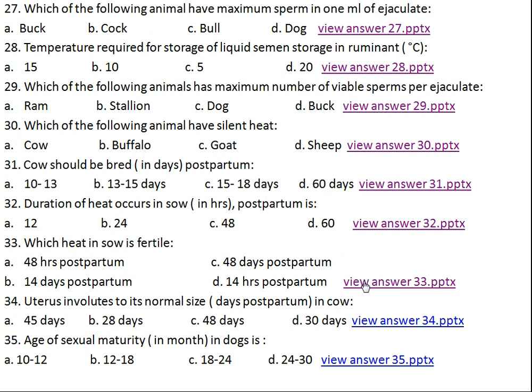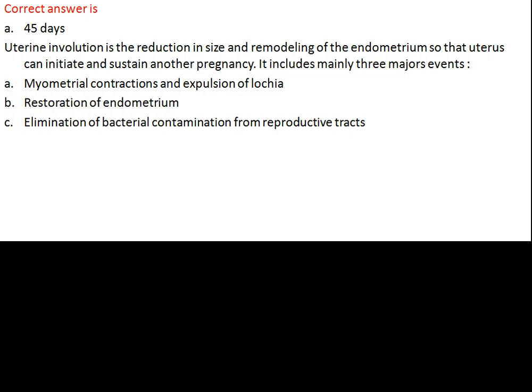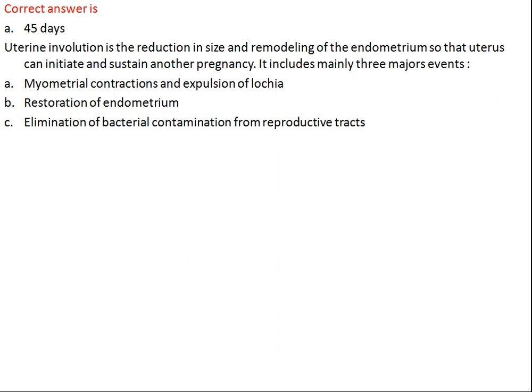Question number thirty-four: uterus involutes to its normal size how many days postpartum in cow? Option A: 45 days, Option B: 28 days, Option C: 48 days, Option D: 30 days. The right answer is 45 days. Uterine involution refers to the process of reduction in size of the uterus as well as remodeling of the endometrium layer so that the uterus can sustain and initiate another pregnancy. It mainly involves three steps: myometrial contractions and expulsion of lochia, restoration of endometrium, and elimination of bacterial contamination from the reproductive tract.